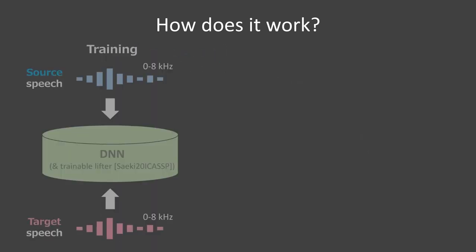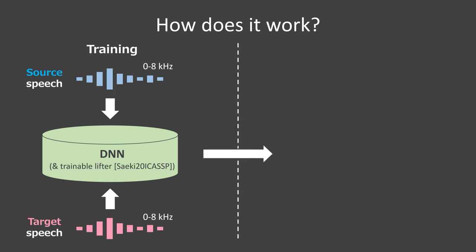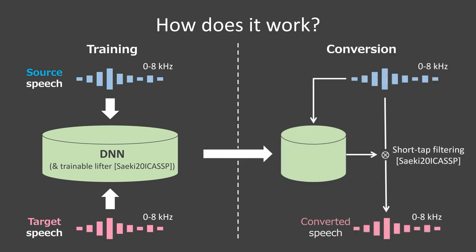Let's take a look at the modeling and conversion process of the lowest band signal. In the training process, the model parameters are trained using source and target narrow band signals. In the conversion process, the differential filter is constructed using the trained model. We can obtain the converted speech by applying the differential filter to the source signal, and we can reduce the computational cost by utilizing our short tap filtering method.